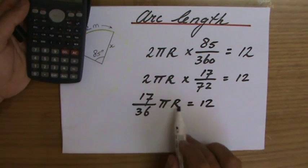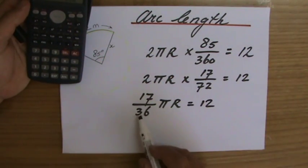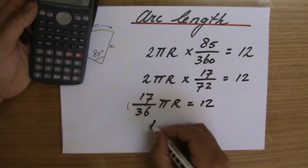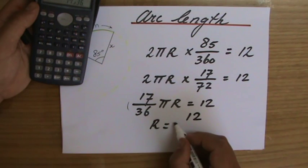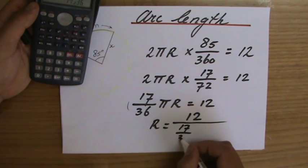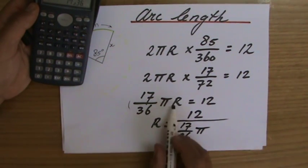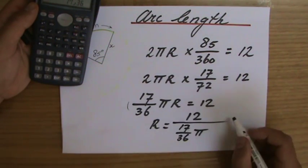Now, if I would have now 6 r equals 12, then I would say, well, r is 2, because I would divide both sides by that coefficient. But now that coefficient looks, or is a little bit longer, but I still do the same. I do 12 divided by 17 over 36 pi. Because that's going to give me r. They're all multiplication signs in between.